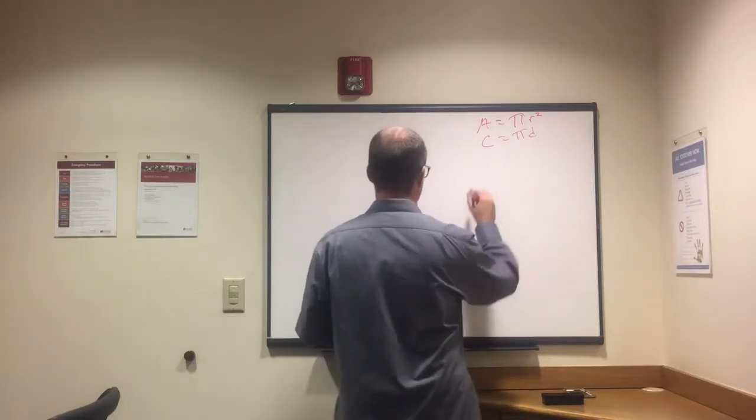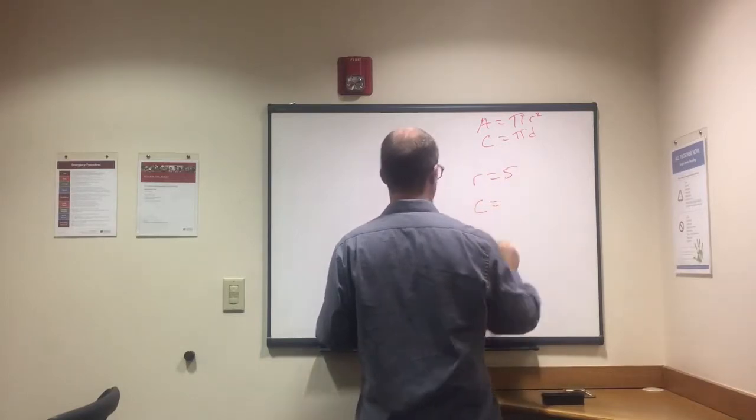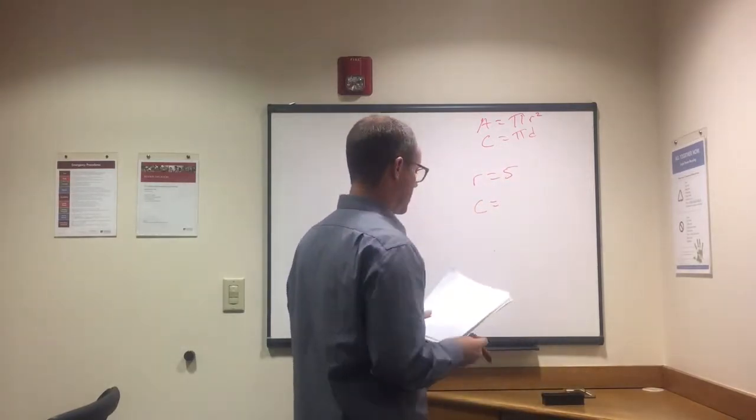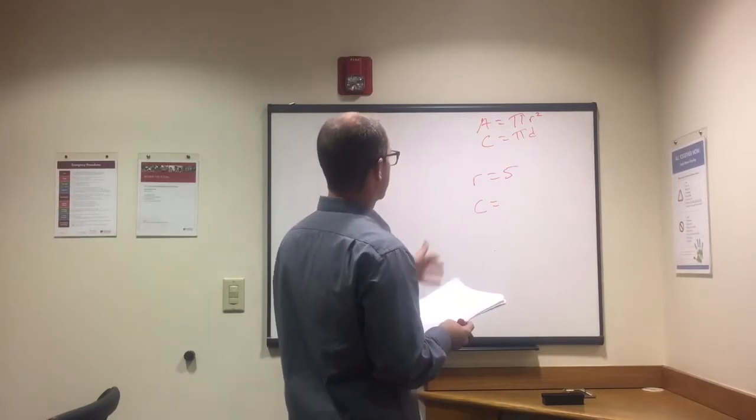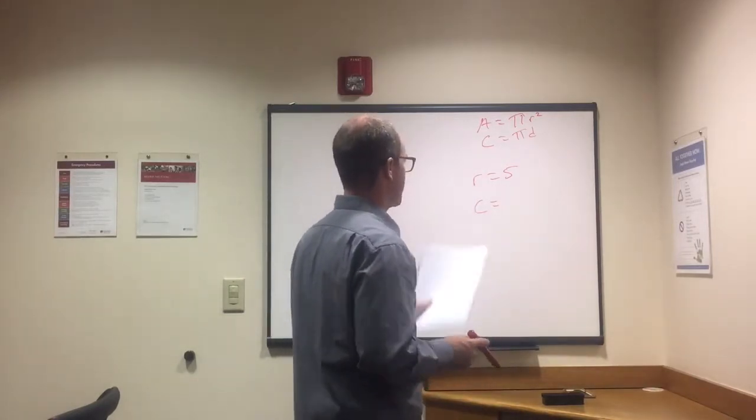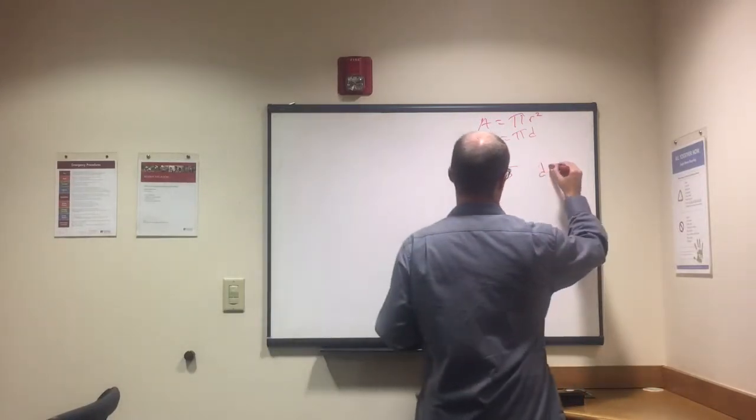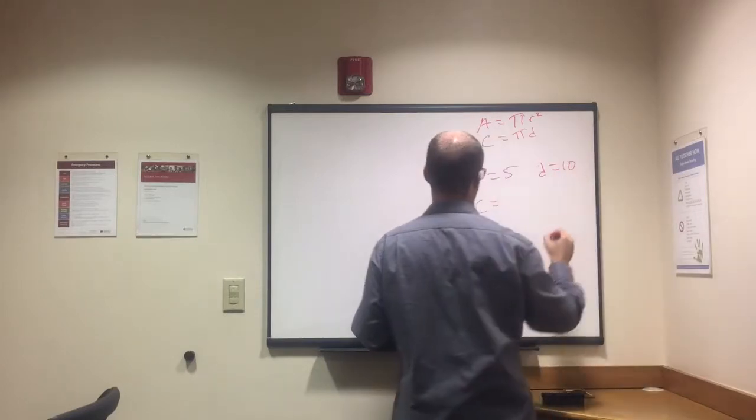Now if the radius equals five, find the circumference. We've got to know that if radius is five, diameter is twice radius, so diameter is 10.